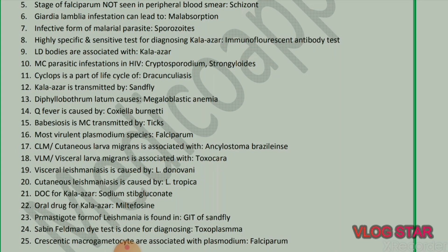Cutaneous larva migrans is associated with Ancylostoma braziliense. Visceral larva migrans is associated with Toxocara. Visceral leishmaniasis is caused by L. donovani; cutaneous leishmaniasis is caused by L. tropica. Drug of choice for kala-azar: sodium stibogluconate; oral drug for kala-azar: miltefosine. Promastigote form of Leishmania is found in the gut of sandfly. Sabin-Feldman dye test is done for diagnosing toxoplasmosis. Crescent-shaped macrogametocytes are associated with Plasmodium falciparum.